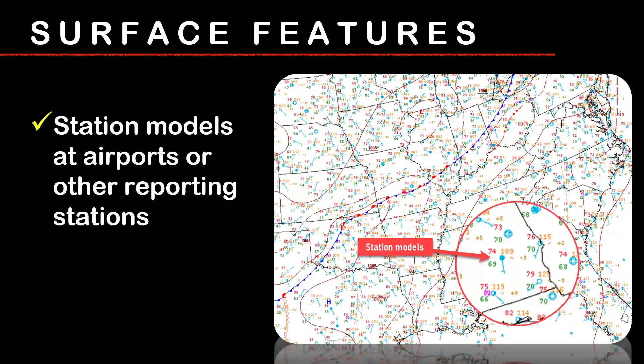One of the things you'll see on some of these charts, especially the surface analysis chart, is something called station models. Those are there to tell you in a graphical form what the surface observation is at that particular station — typically, in this case, it's usually an airport.